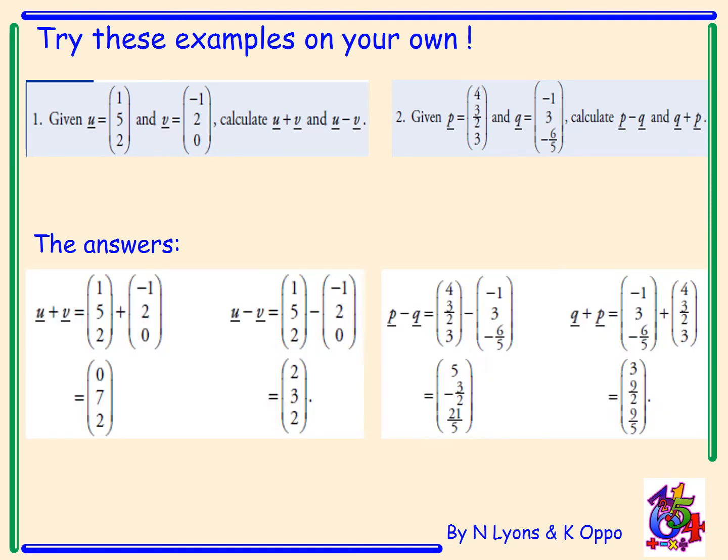The answers: u plus b is 0, 7, 2. U minus b is 2, 3, 2. P minus q is 5, negative 3 over 2, 21 over 5. And q plus p is 3, 9 over 2, 9 over 5.